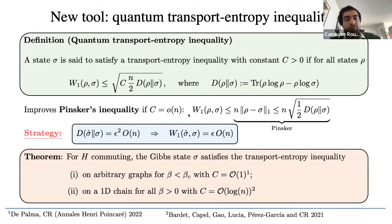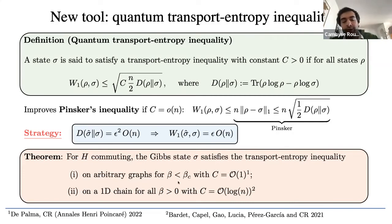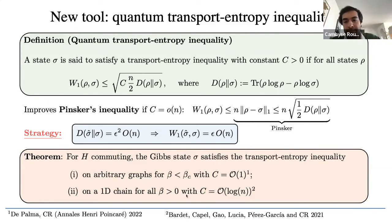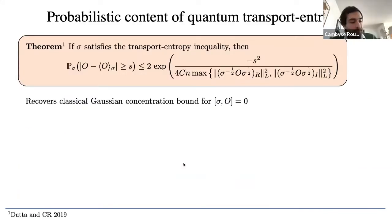Our first main result shows that this transport entropy inequality holds for Gibbs states of commuting Hamiltonians at high enough temperature. Specifically, the Gibbs state σ of a commuting Hamiltonian satisfies the transport entropy inequality on arbitrary graphs above some threshold temperature, with a constant that does not scale with system size. More recently, we also proved that a transport entropy inequality holds at all positive temperatures, with a constant scaling logarithmically in system size, which is still sufficient for our purposes.